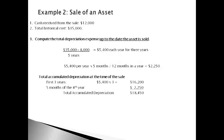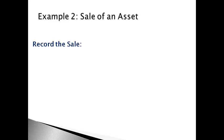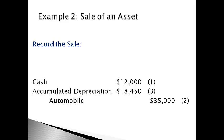Now that you have all the required information, determine the gain or loss on the sale of the asset. The gain or loss is the difference between the cash received and the book value at the time of the sale. The journal entry is made using the information gathered: increase cash for the amount received, decrease the automobile account for the historical cost, and remove the accumulated depreciation to the date of sale. Determine the debit or credit needed to balance the entry and record a debit for the loss.